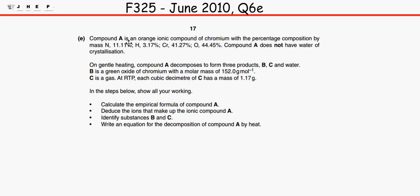Compound A is an orange ionic compound of chromium. So the first clue we've got here is that it contains chromium, with a given percentage composition by mass. Compound A does not have water of crystallisation.